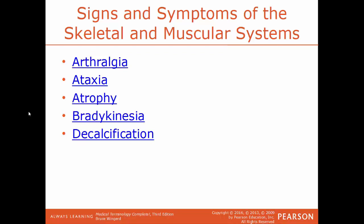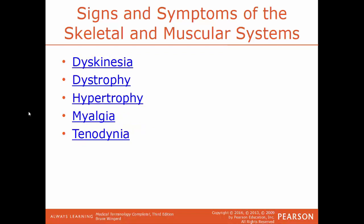Decalcification is where bones lose calcium, making them weaker. Dyskinesia is an impairment of normal voluntary movements. Dystrophy is a disorder where an organ or tissue wastes away due to impaired nourishment — muscular dystrophy is an example. Hypertrophy is an enlargement of an organ or tissue due to an increase in size. Myalgia is pain in a muscle or group of muscles. Tenodynia, now more commonly called tenalgia, refers to pain in the tendons.